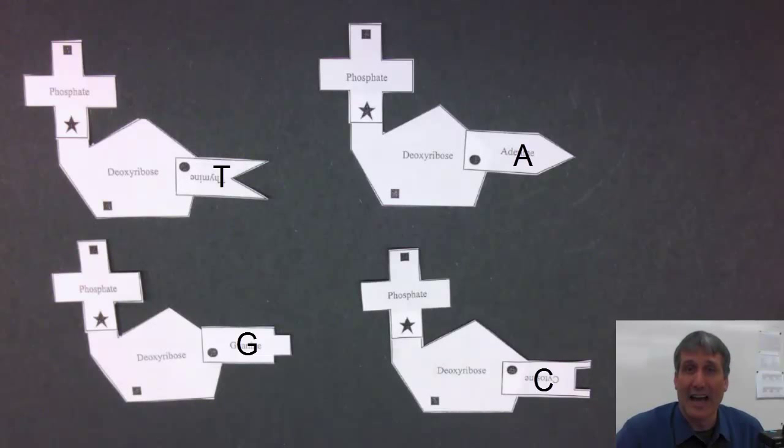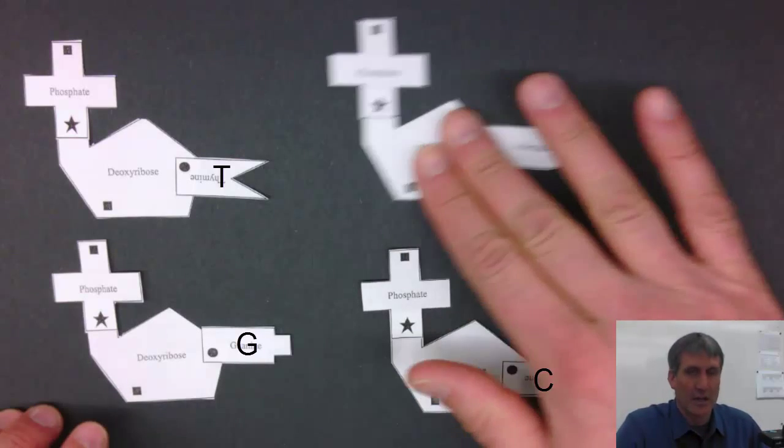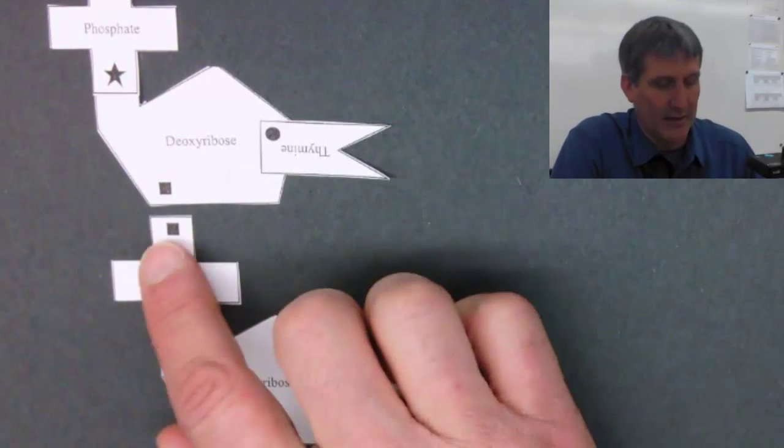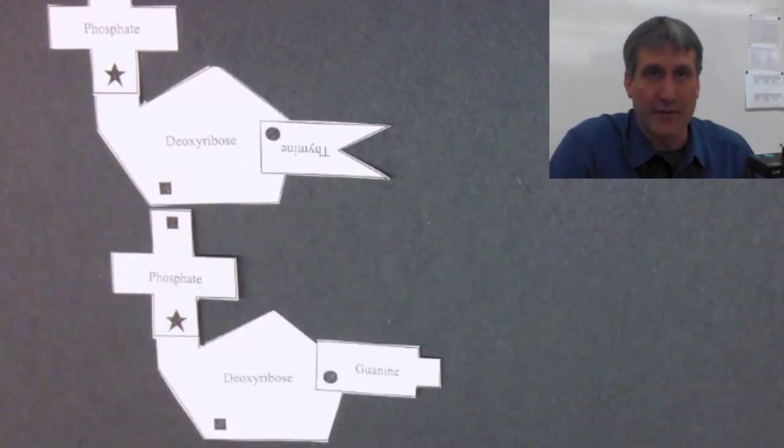So now we need to learn how these nucleotides bond together to make the double-stranded molecule DNA. As you can see from these coated nucleotides, there's a square on the top of the phosphate and also a square on the deoxyribose.